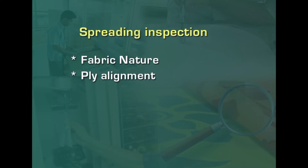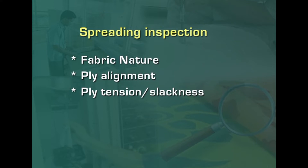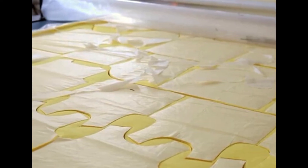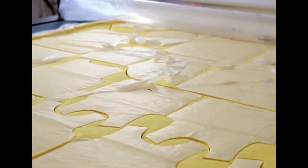Ply alignment is important — the greater the variation in either width or length alignment, the greater the waste in precision cutting, because ends and sides must be trimmed to the narrowest and shortest plies. Another defect is ply tension or slackness: tight spreads make the pattern smaller after cutting, while slack spreads cause excess length within the stipulated spread length, making pattern pieces larger.